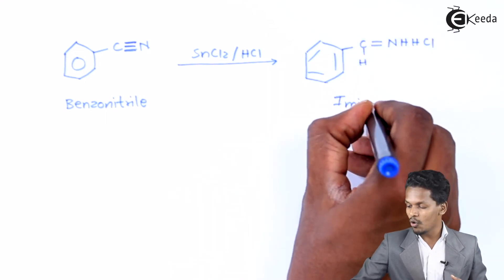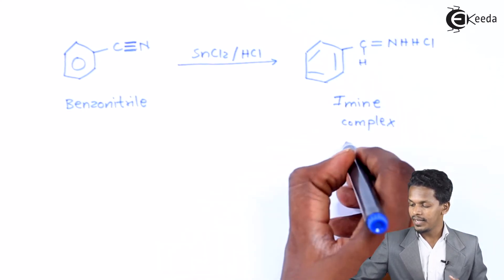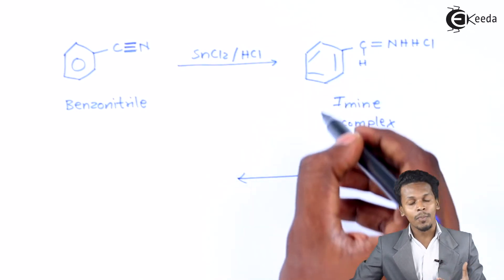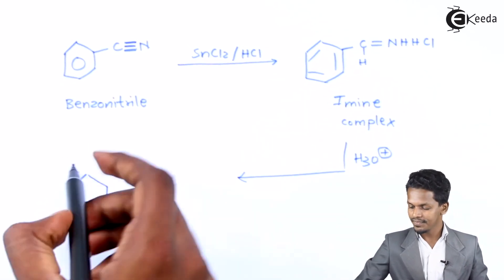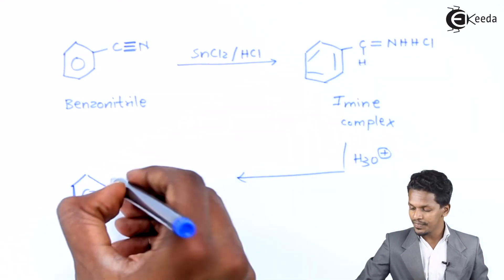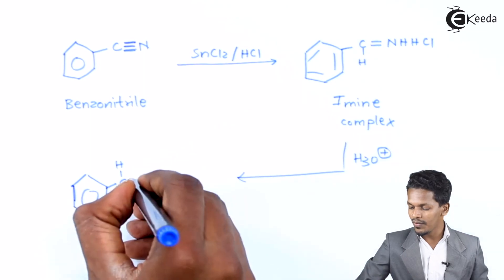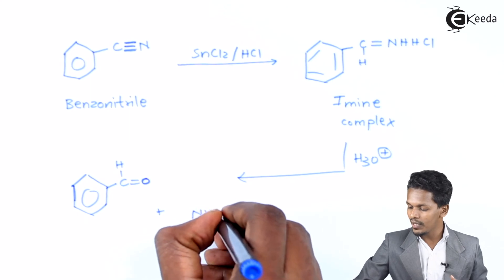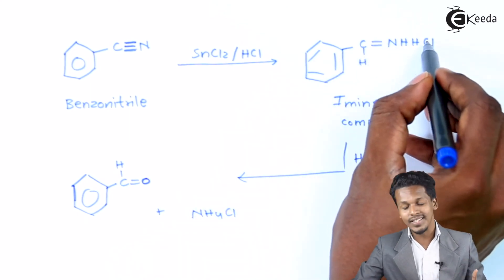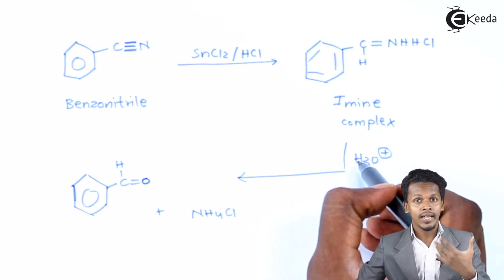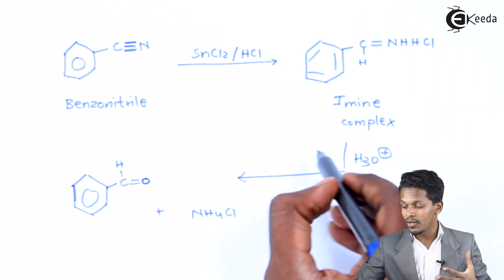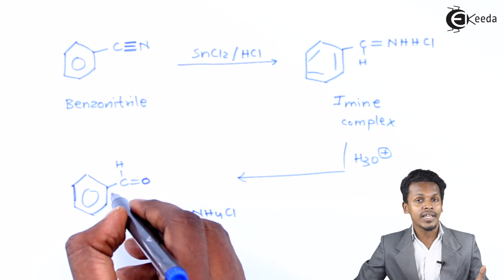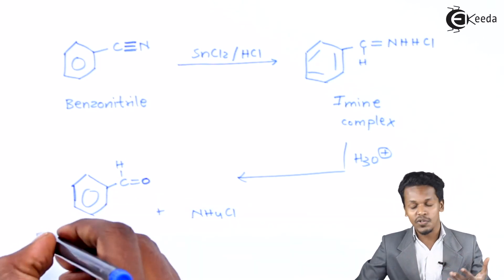So this is the imine complex obtained from benzonitrile. It will then undergo the acid hydrolysis process, where the imine complex is converted into the aldehyde — the CH group remains with a C=O double bond acquiring an oxygen atom — and the by-product formed is NH₄Cl. The main product formed here is benzaldehyde.